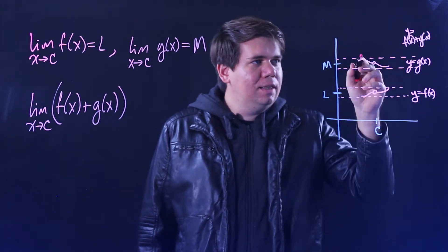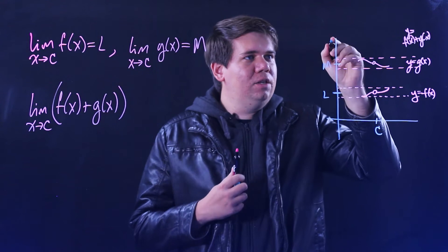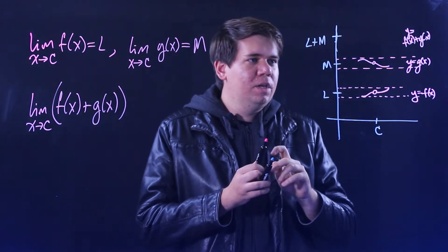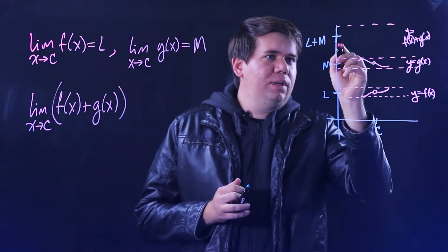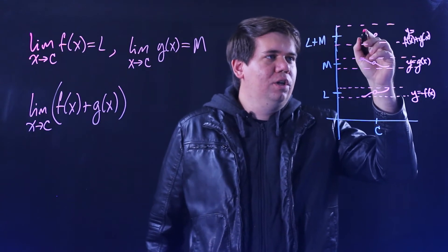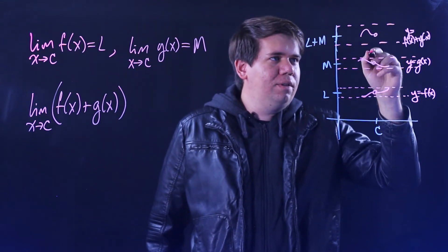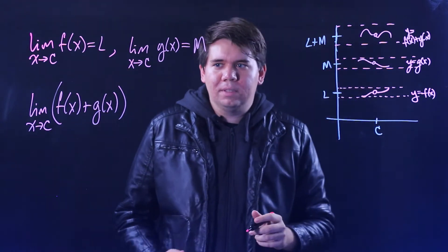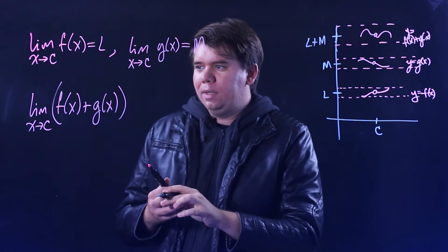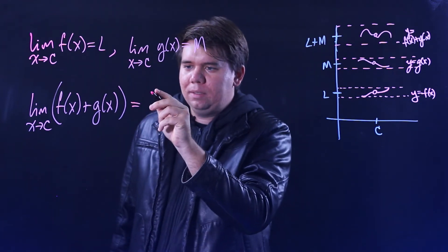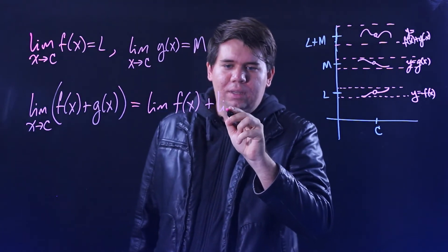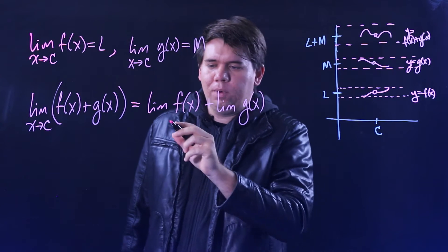...then it's going to make sense that you'll end up with a function that's getting arbitrarily close to L plus M. You'll be arbitrarily close to L plus M when you're sufficiently close to C. Who knows what it looks like — some combination of these two things — but it'll be arbitrarily close to L plus M. So you'd expect this limit would just be L plus M: the limit of what F of X was, plus the limit of what G of X was, as X approaches C.